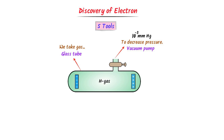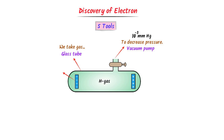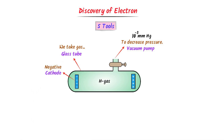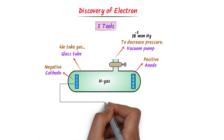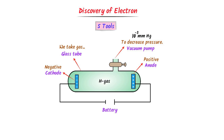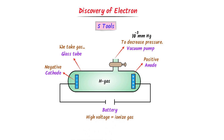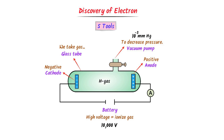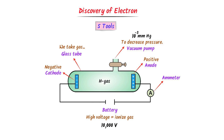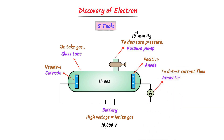The third tool is two metallic strips. One metallic plate is the cathode, which is the negatively charged plate. The second plate is the anode, which is the positively charged plate. The fourth is a high voltage source like a battery — we need high voltage like 10,000 volts in order to ionize the gas. The fifth tool is an ammeter, which is used to detect the flow of current in the circuit.